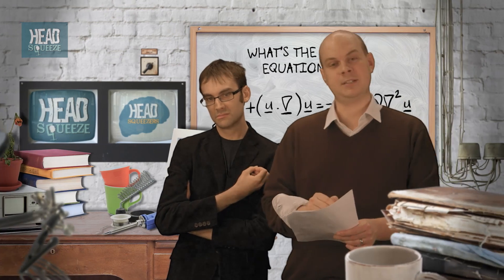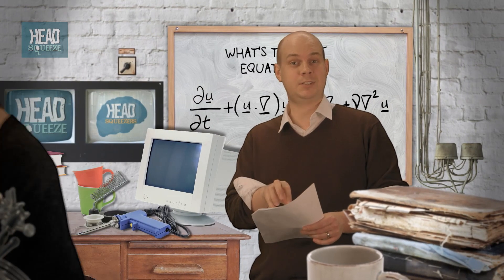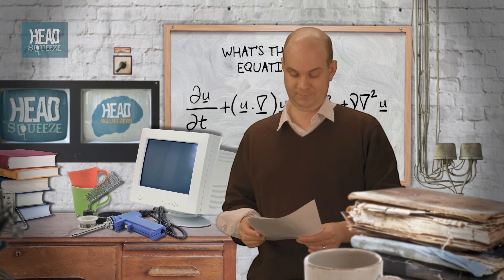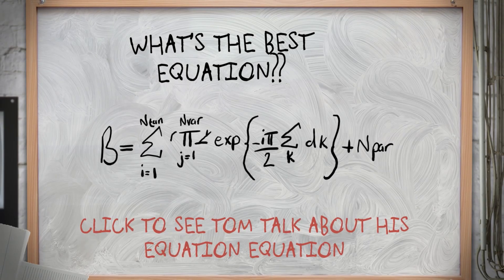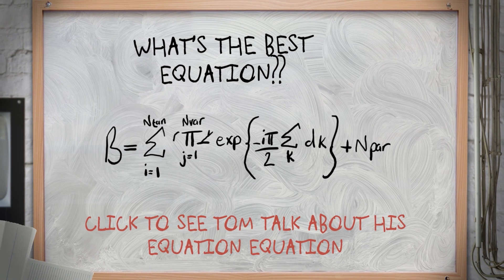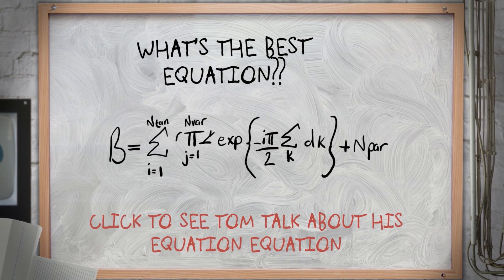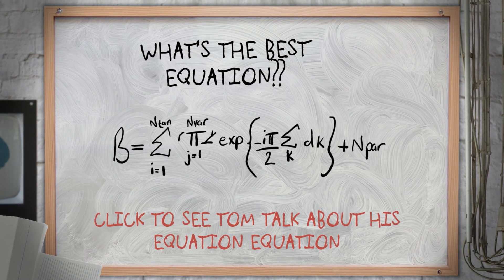Which is why I would like to present my equation for the best equation. So, the first term represents the sum of all the component terms of the original equation itself. The second term is the geometric product of the dimensional constants featuring in the equation. And then the third term is the exponent of the number of dimensions involved in the equation.